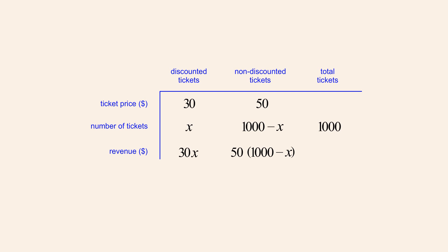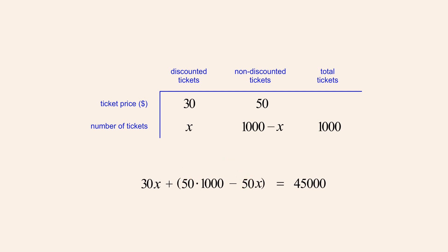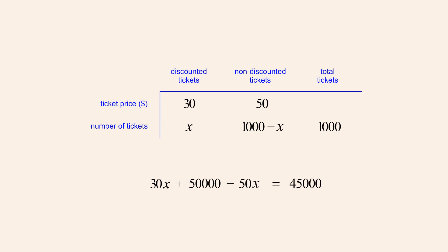Since the total revenue generated by both types of tickets must be $45,000, we can create an equation which says that the revenue from discounted tickets plus the revenue from non-discounted tickets is equal to $45,000. We can now solve this equation for x. We start by distributing 50 to the two terms in parentheses, then complete the arithmetic, multiplying 50 times 1,000 and eliminating the parentheses. Combining like terms, we subtract 30x minus 50x to get negative 20x.